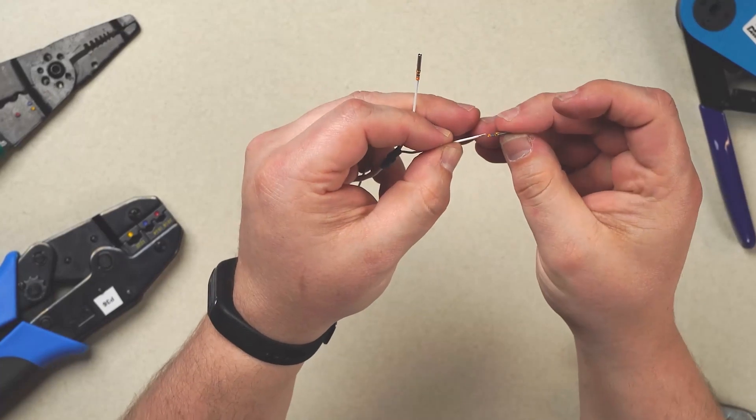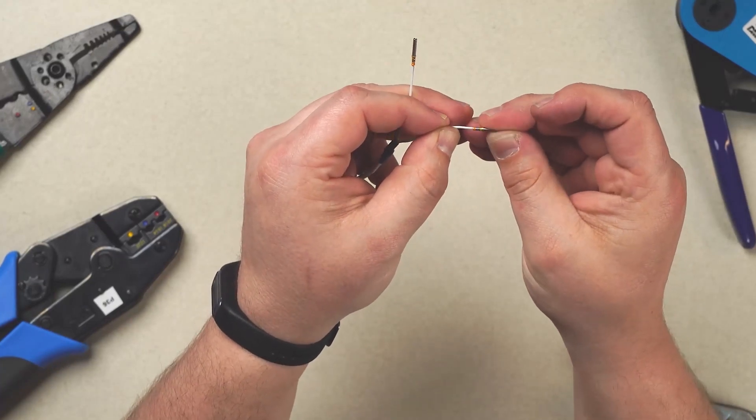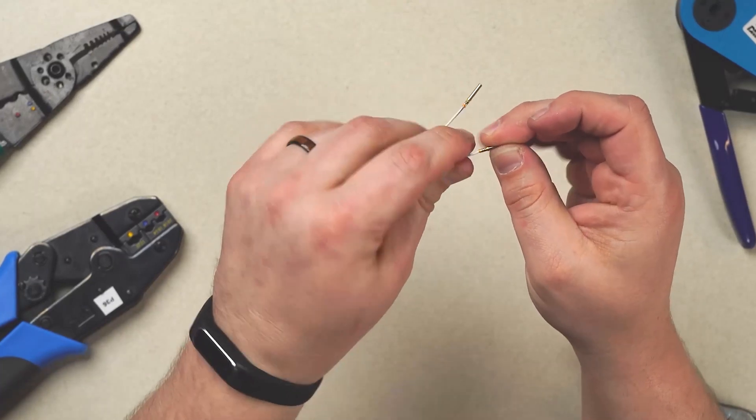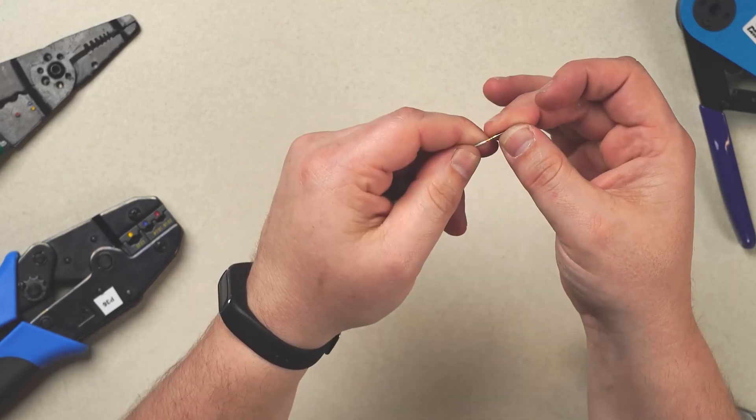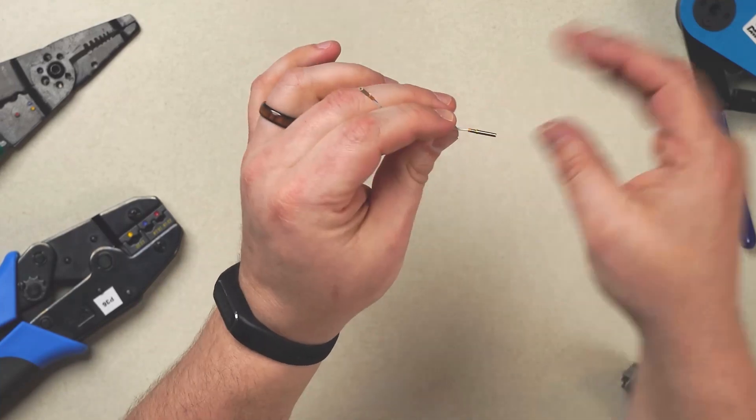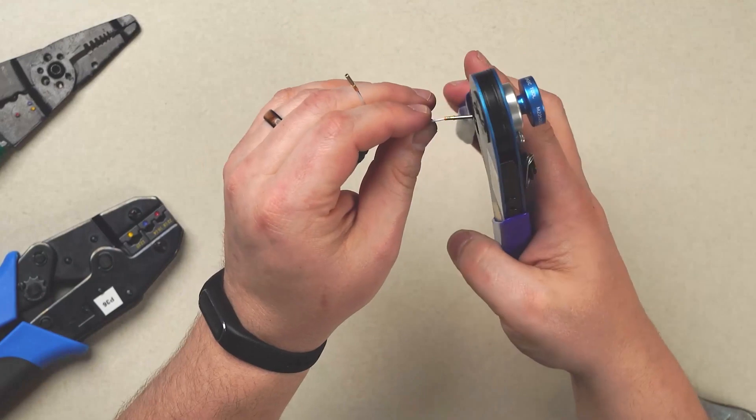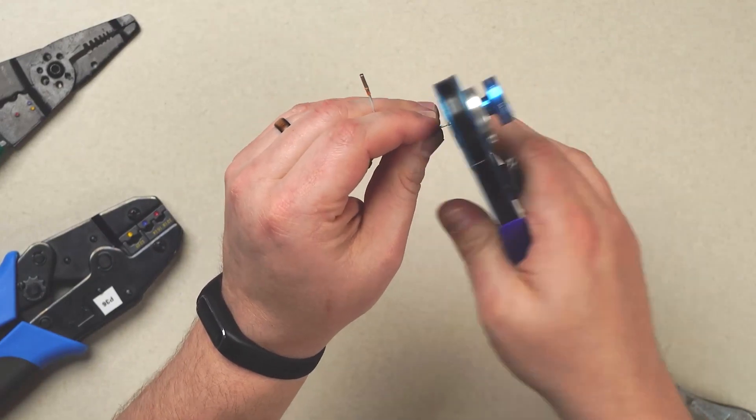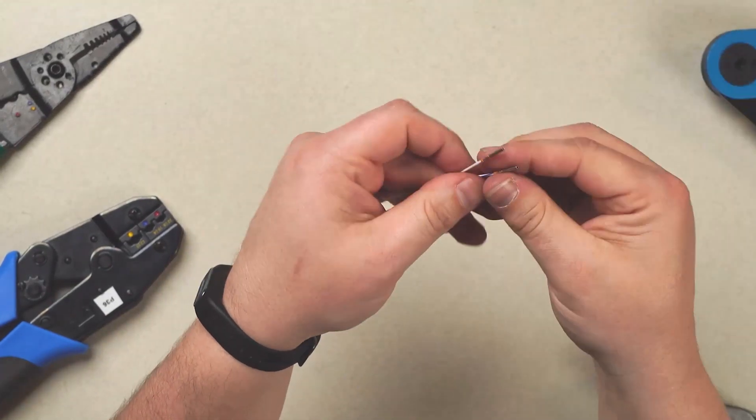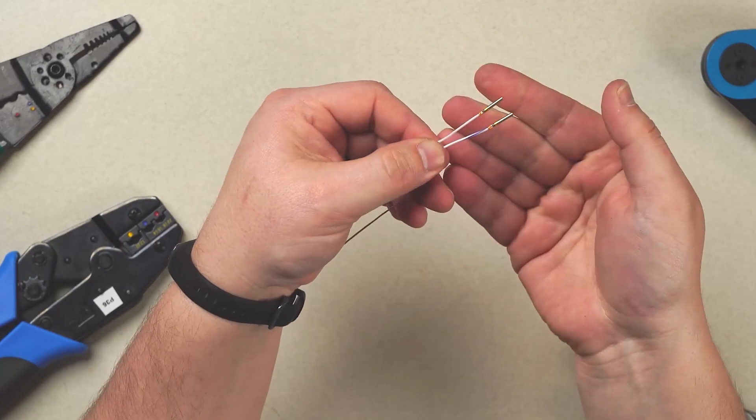Same thing on our second wire here. We're going to use the window. We see the wire in the window. We see that our insulation is not inside of the pin itself. So we're bottomed out properly. Crimper set properly. Well executed crimp every single time.